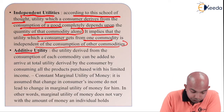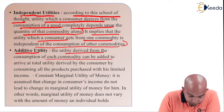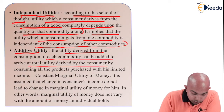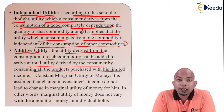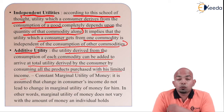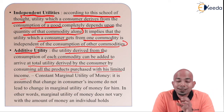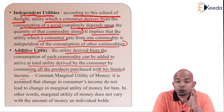The next assumption is additive utility. The utility derived from the consumption of each commodity can be added to arrive at the total utility derived by the consumer from consuming all products purchased with his limited income. Whatever items he has purchased, if he consumes them one by one, all the satisfaction gained can be added together and taken into consideration.